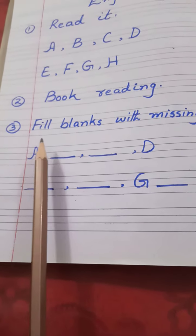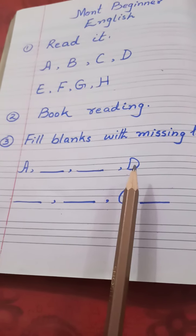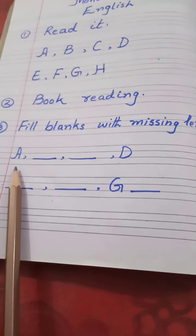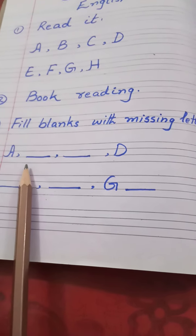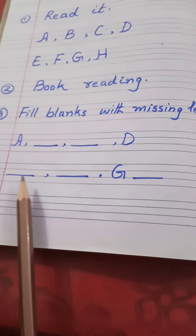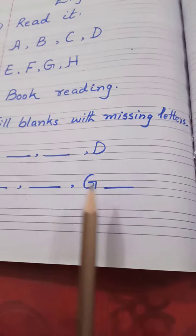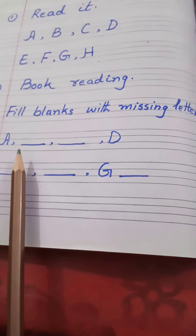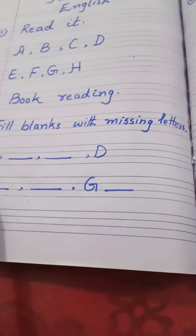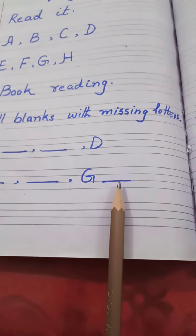Now students, this is your homework. Do it at your home. Fill blanks with missing letters: A dash dash D dash dash G H. Fill in B, C, E, F, and H.